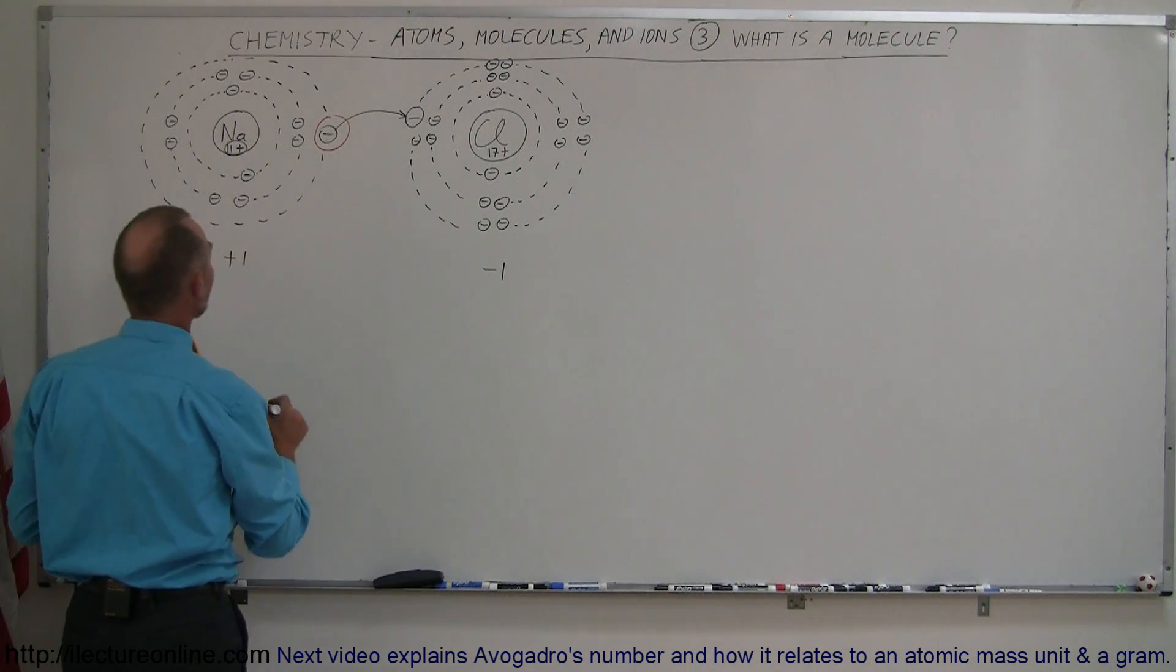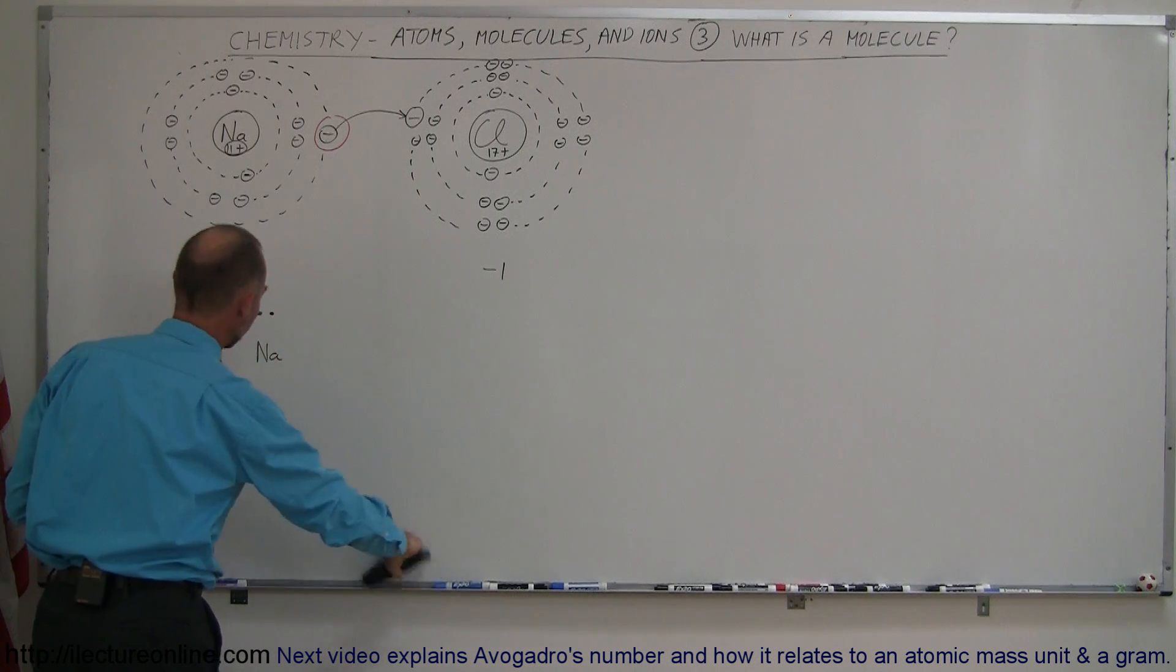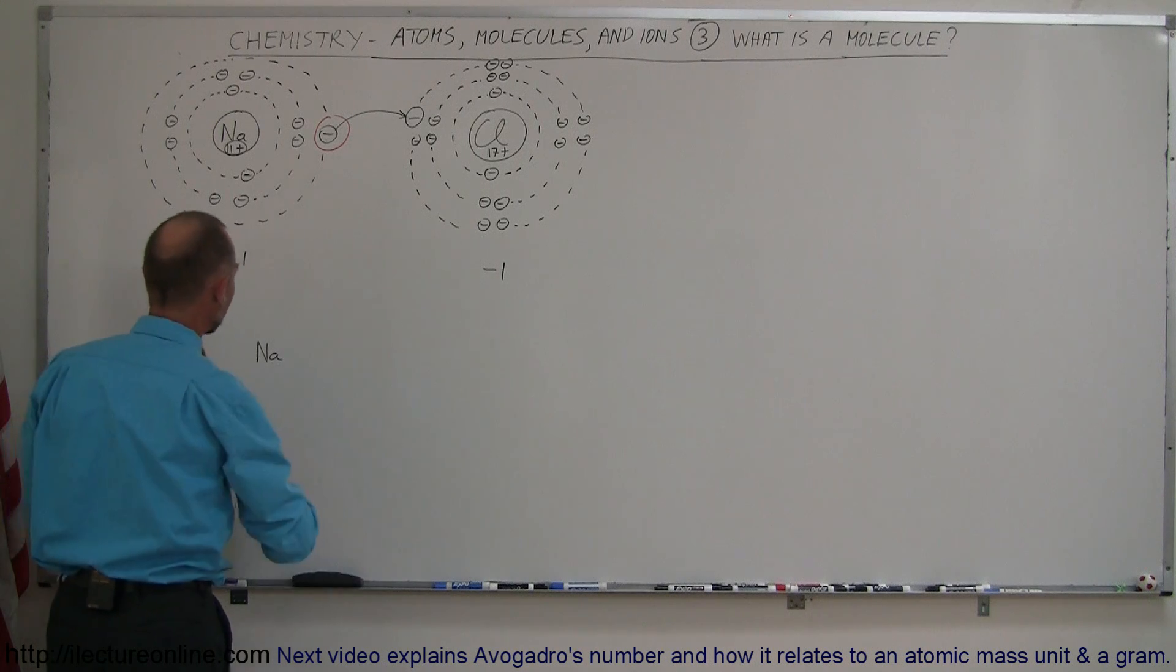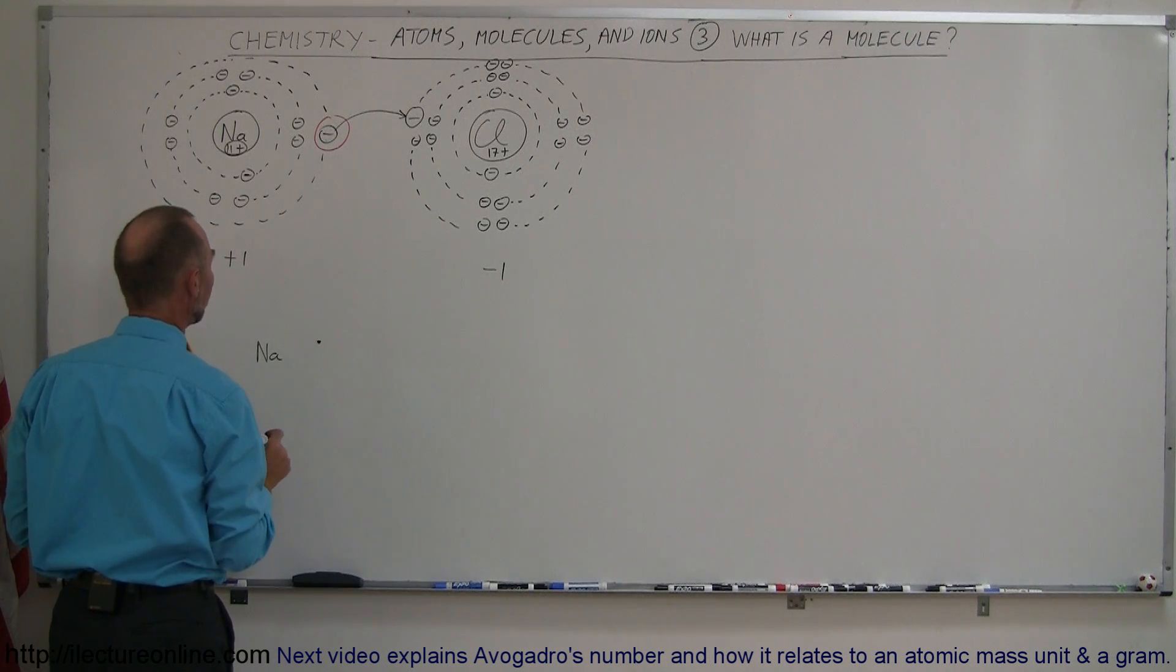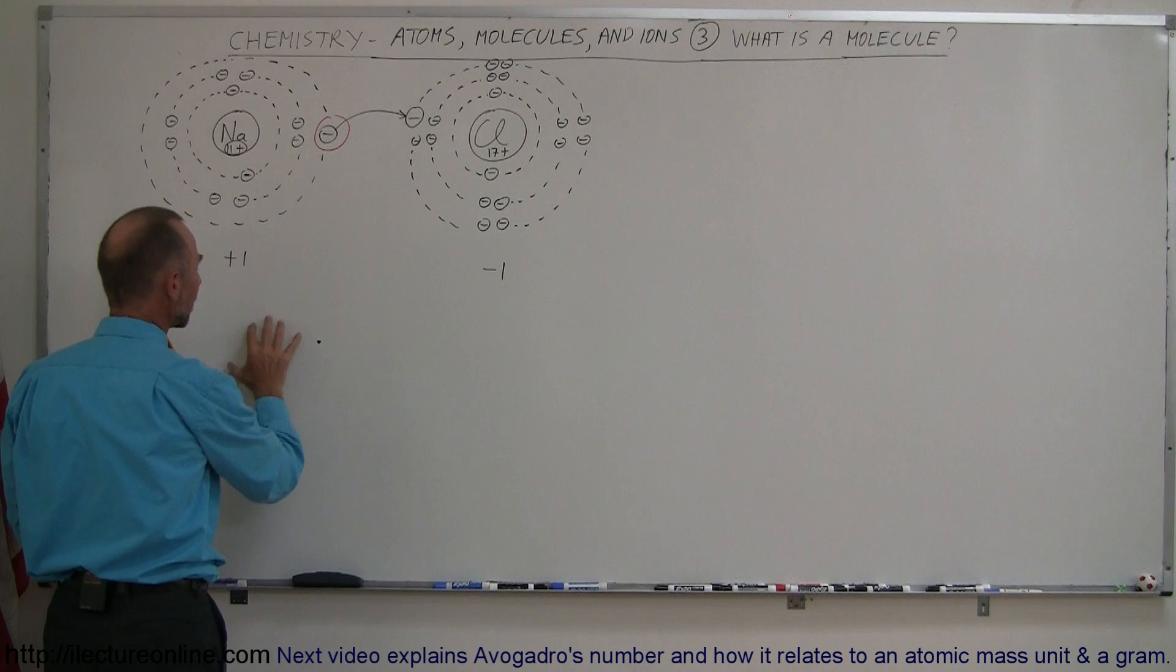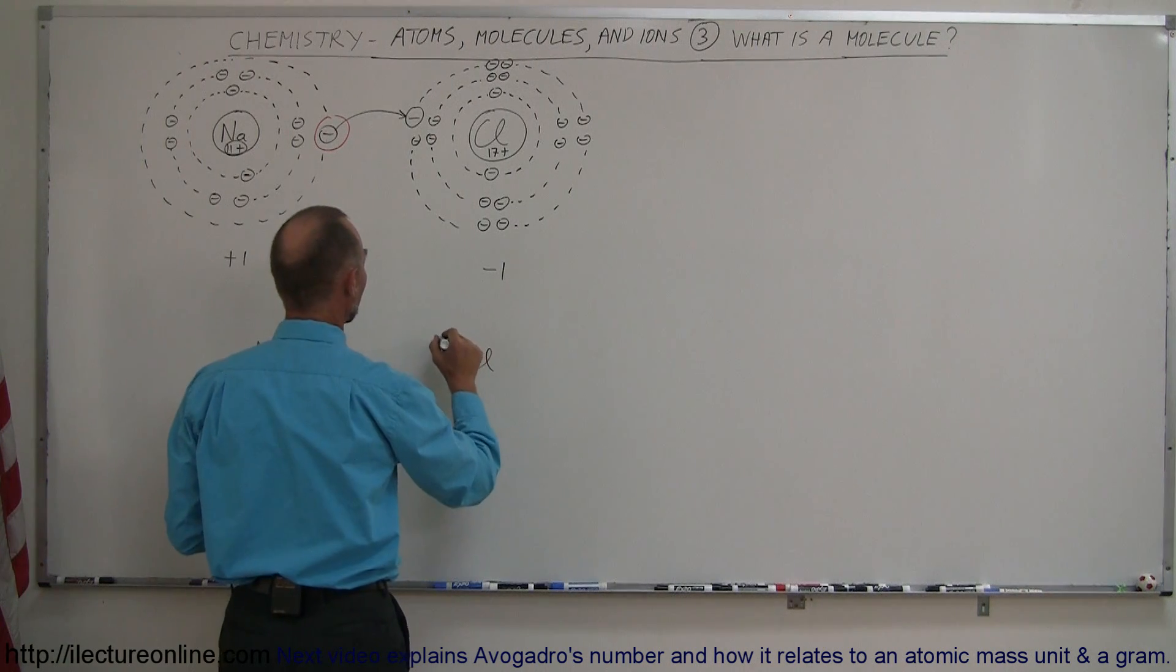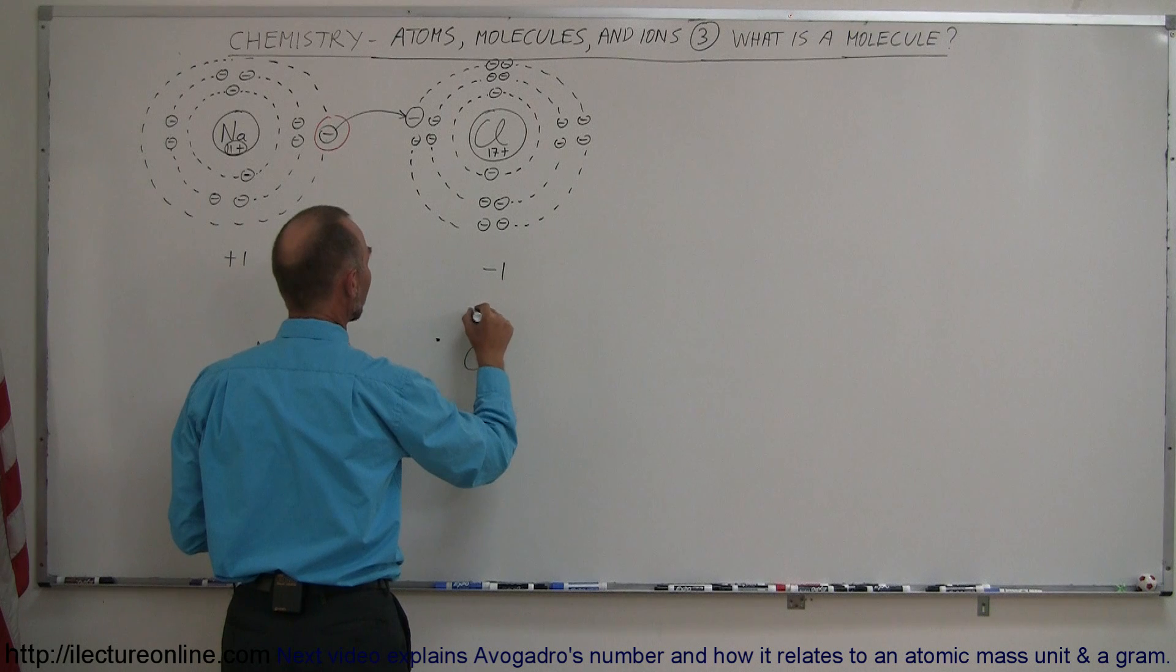Now the way we like to write that is we like to write the nucleus, like Na, with the number of electrons in the outer shell. Now notice, in this case, in the outer shell there's only one electron in the outer shell, and then in the innermost shell, there's of course eight in the innermost shell, but only one in the outermost shell, and here we have chlorine that has seven in the outermost shell, like that.